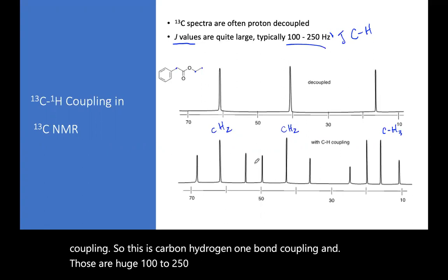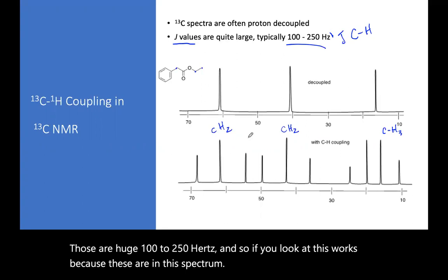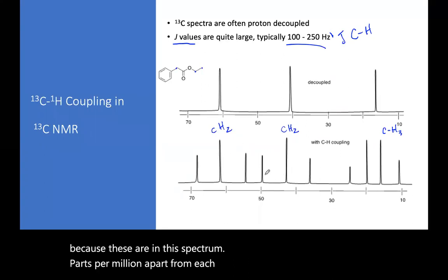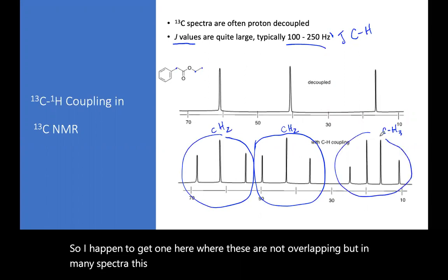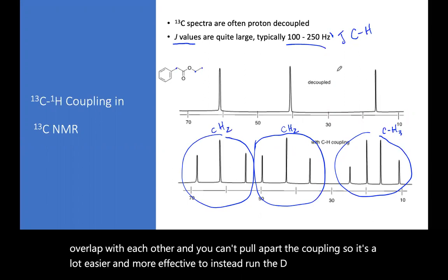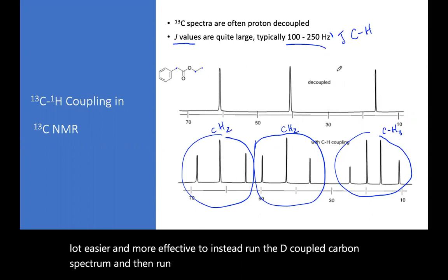And so if you look at this, this works because these are, in this spectrum, 15 parts per million apart from each other. And so I happen to get one here where these are not overlapping. But in many spectra, this is almost impossible, because the peaks will start to overlap with each other and you can't pull apart the coupling. So it's a lot easier and more effective to instead run the decoupled carbon spectrum and then run the DEPT to get the coupling information.